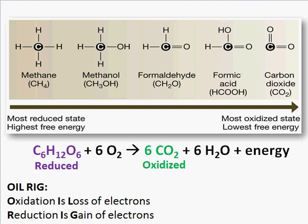In redox reactions, bonds are broken or rearranged, and when we do this, electrons are lost and they have to go somewhere. Something is oxidized, meaning it loses electrons, and the electrons don't disappear — another molecule grabs them and it is reduced. We have a saying for redox reactions called OIL RIG: oxidation is loss of electrons, and reduction is gain.